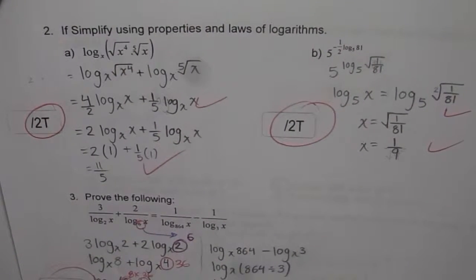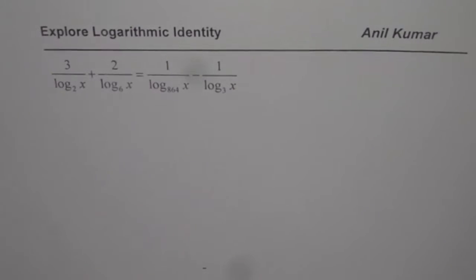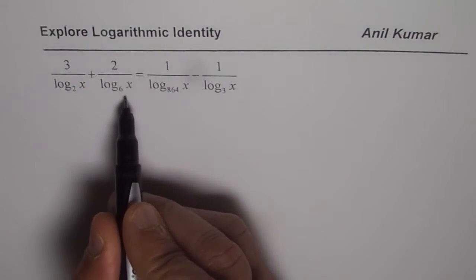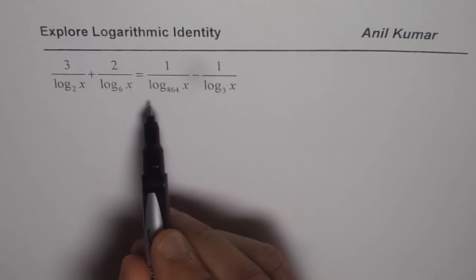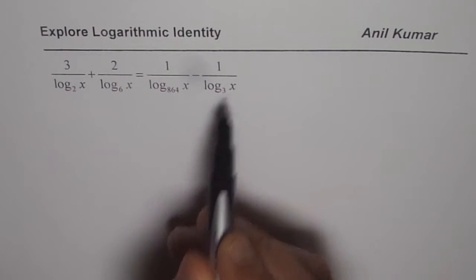Let me discuss the logarithmic with reciprocal logs in this particular video. So the question here is 3 over log to the base 2 of x plus 2 over log to the base 6 of x is equal to 1 over log to the base of 864 x minus 1 over log 3 x.